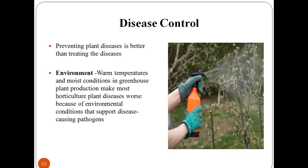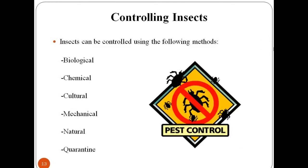Let us learn about control measures of plant disease. It is very important to remember that a correct diagnosis is the most important step in the eventual control of plant disease. Most diseases have a fairly well-established control protocol, and plant diseases must be identified before they can be treated. Pest control refers to the regulation or management of species defined as a pest. Many pests have only become a problem because of direct actions of humans, and modifying these actions can reduce the pest problem.